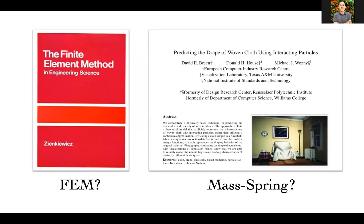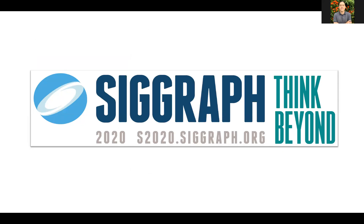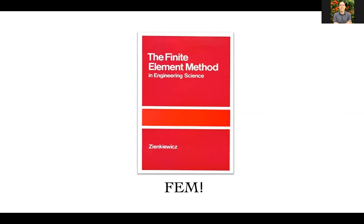Even though it's been around for a while, a few questions remain. First: which numerical model is it — FEM, mass-spring, or position-based? Several papers, including one at SIGGRAPH this year, claim it's mass-spring, but that is wrong. It is quite firmly an FEM model. It looks like one, but a few pieces — like shape function derivatives and strain energies — don't explicitly appear, so there are gaps to fill.